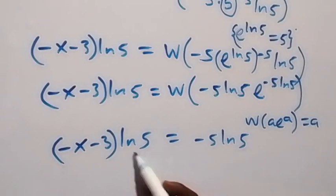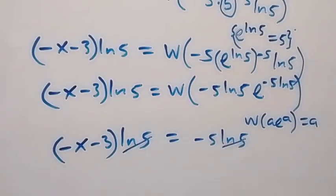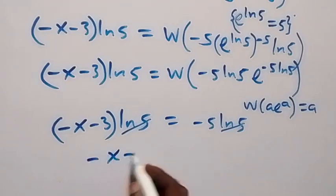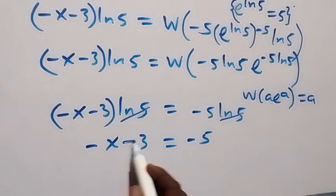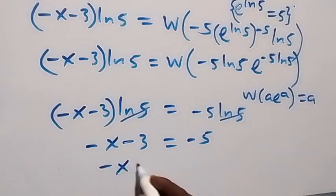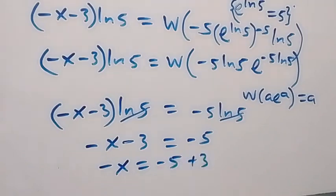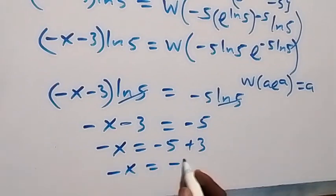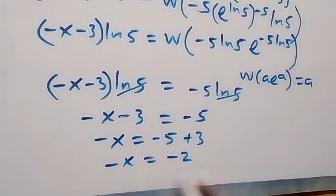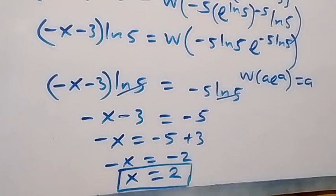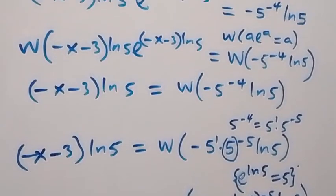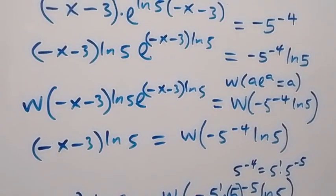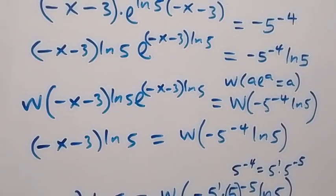Both sides have ln 5, so ln 5 divides through and we are left with minus x minus 3 equals to minus 5. From here we solve for x: take minus 3 to that side, so minus x equals to minus 5 plus 3, which is minus 2. Multiply through by minus, so x equals to 2. The solution is x equals to 2. Thank you for watching, don't forget to subscribe to my channel, turn on the notification bell, share this video, give me a thumbs up, and if you have some other way to solve this put it in the comments. See you next time, bye for now.